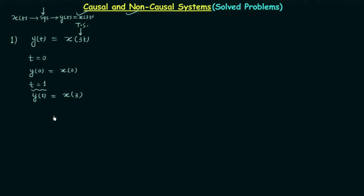So t equals 1 means y(1) is the present output, but x(3) — the input — has t equal to 3. With respect to t equal to 1, this is a future input. So the present output depends on the future input, which is why the system is non-causal. Don't only check for t equal to 0; check for other values of time as well.